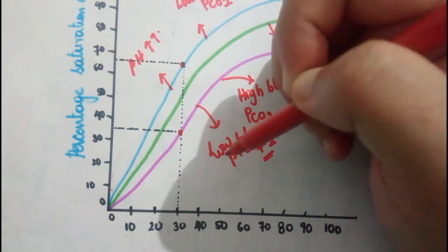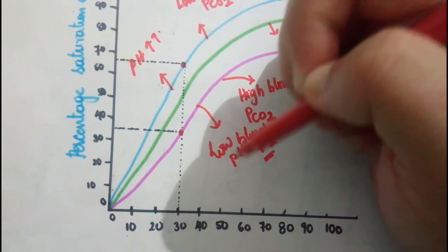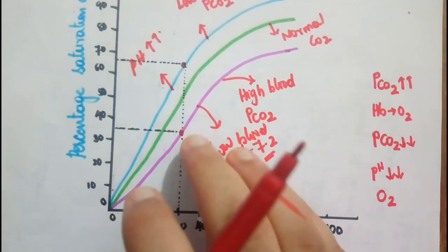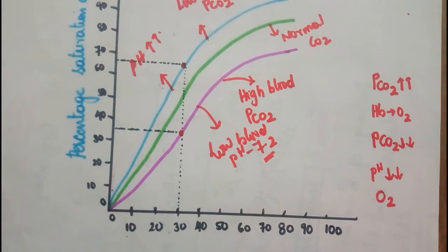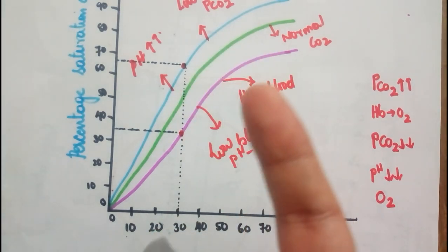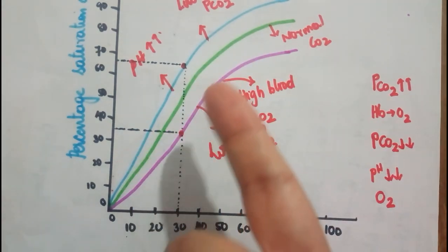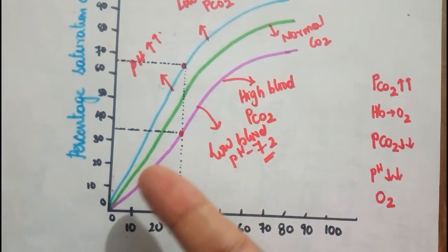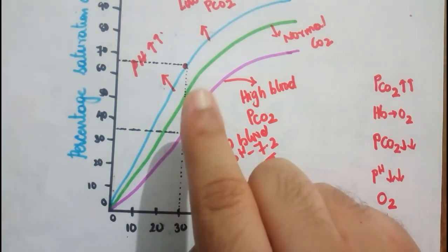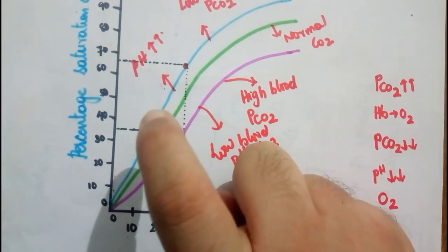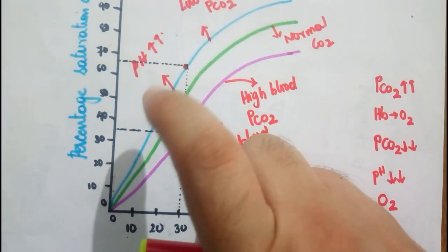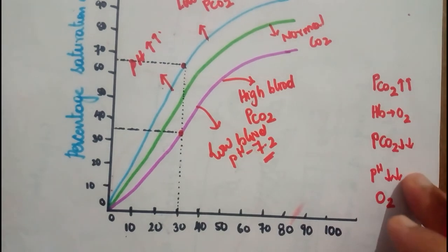So this is about pH. To summarize, two factors have been studied: first, when carbon dioxide concentration is high, the curve shifts towards the right; when CO₂ concentration is less in the blood, the curve shifts towards the left. Similarly, low pH (more acidity, more proton concentration) shifts the curve right, and high pH shifts it left.